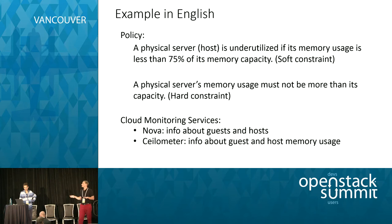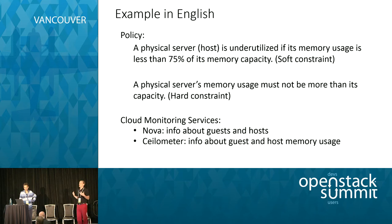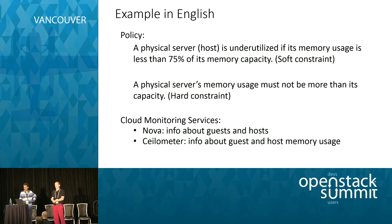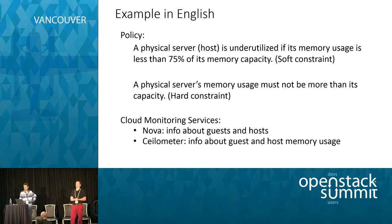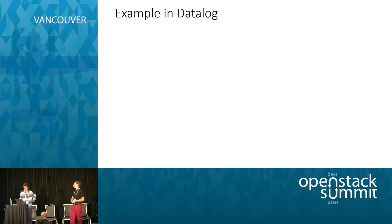Just looking at those English policies, what kinds of services would you consult to check whether or not policy is being satisfied? The services in OpenStack you need are Nova — because Nova tells you what all the servers are and the memory capacities — and something like Ceilometer, because it tells you what the actual memory utilization is at any point in time. So intuitively you need those two services. Now I'm going to show you how you write those policies in Datalog — the assembly language of Congress.